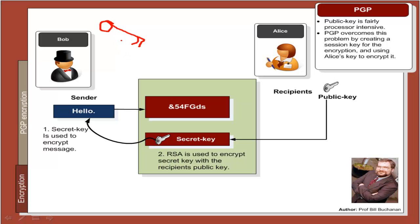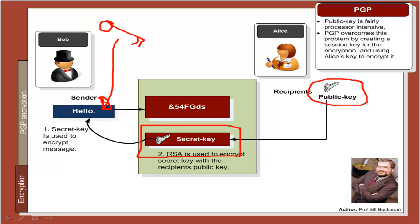The session key is used to encrypt the content. Alice's public key is then used to encrypt the secret key. So we now have two things: the encrypted content (encrypted by the secret key) and the secret key encrypted by Alice's public key. On the other side, the first thing Alice does is use her private key to unlock the secret key. Once the secret key is unlocked, she can then use it with a private key algorithm to decrypt the cipher text.